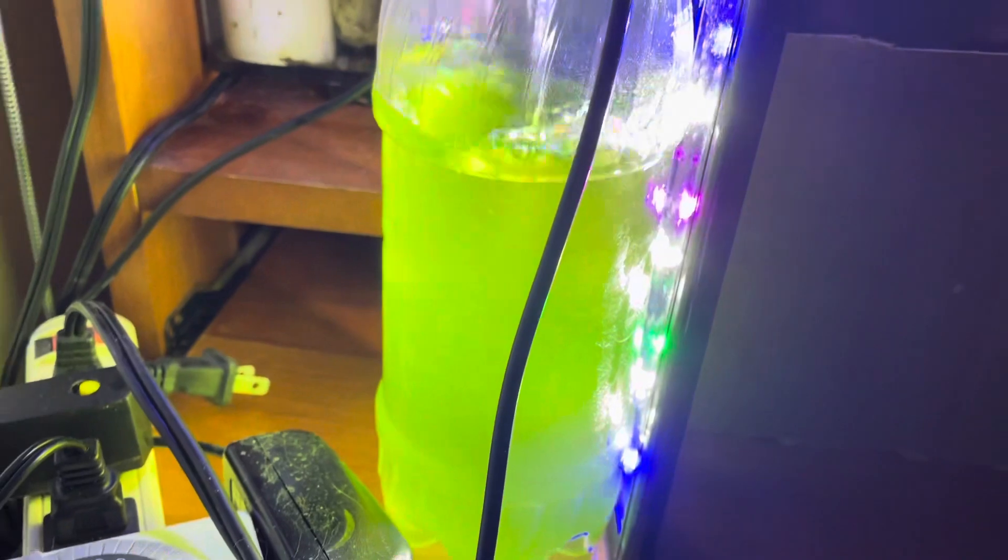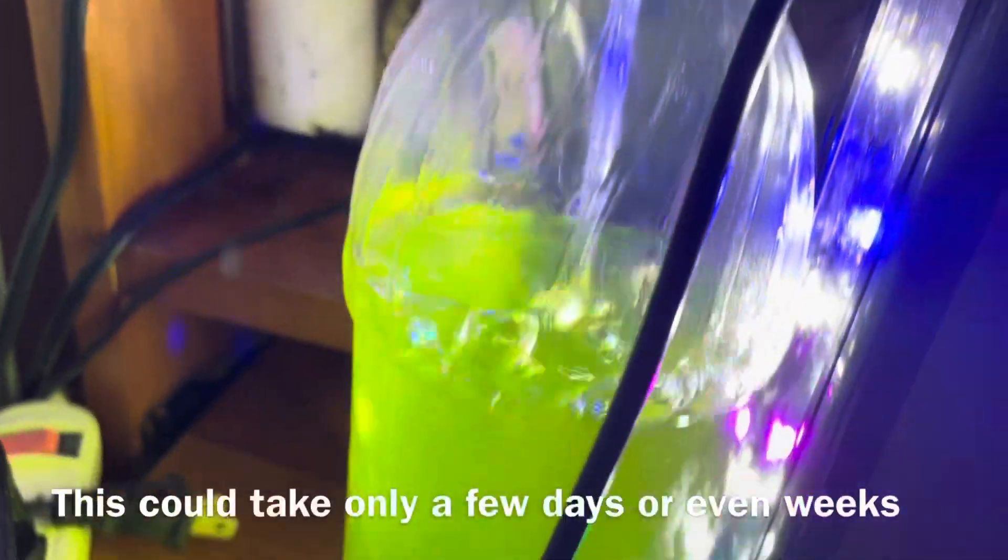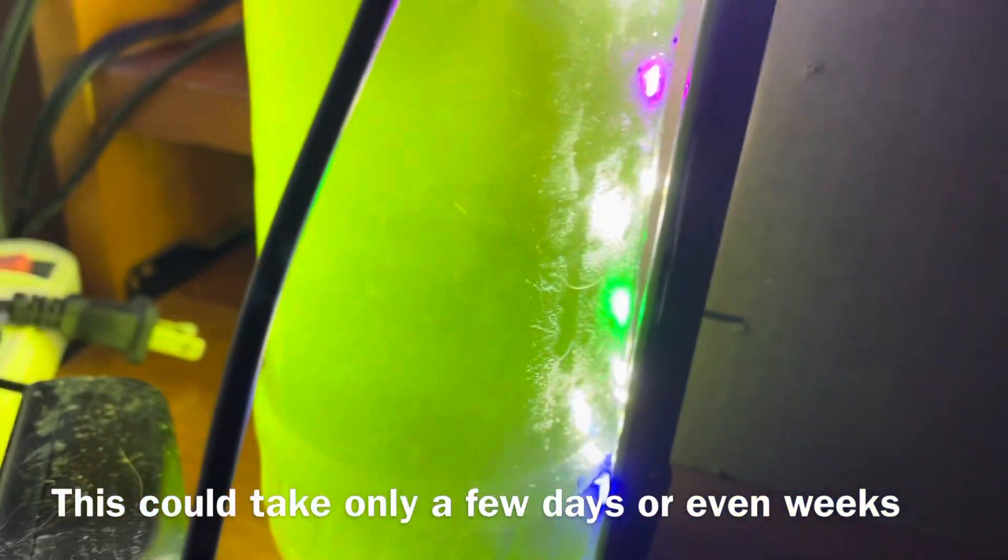The time it takes for the phyto to ripen usually varies depending sometimes on the amount initially added. This should be provided with 16 hours of light and 8 hours of darkness.